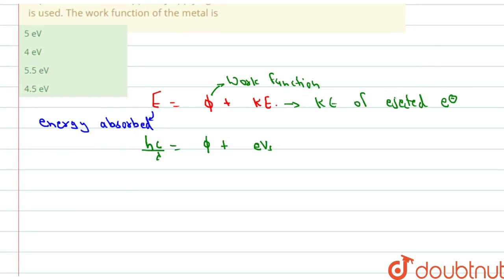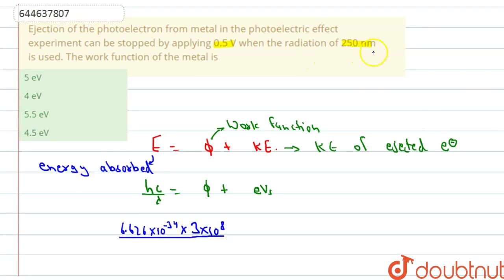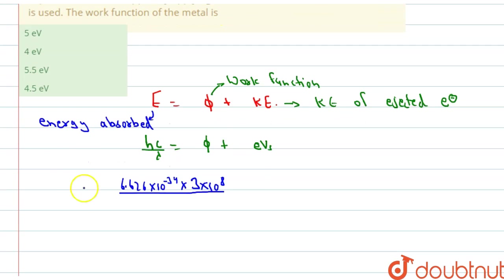Let's start putting the value here. This is H is 6.626 into 10 to the power minus 34 multiply C, this is the speed of light which is 3 into 10 to the power 8, divided by lambda is our radiation which is 250 nanometer. We'll convert it into meter, so 250 multiply nanometer is 10 to the power minus 9. Now this whole thing is in joules. So if we want to convert this, we have to divide it with 1.6 into 10 to the power minus 19.